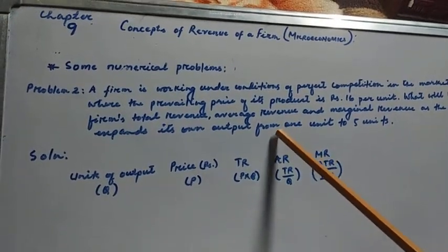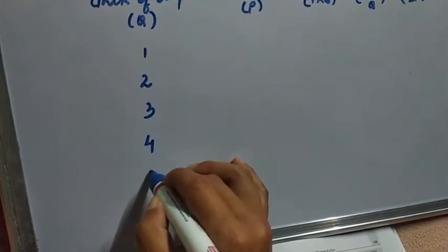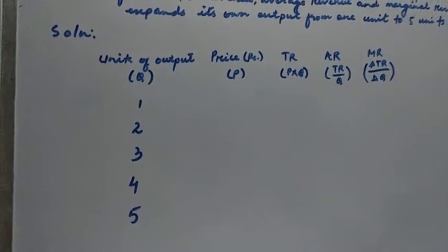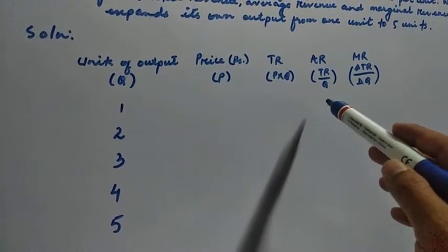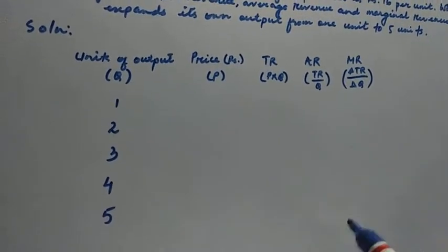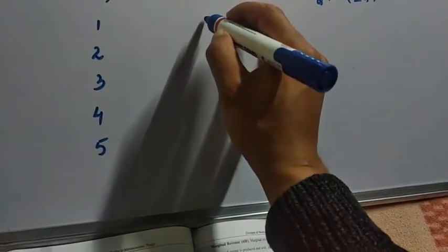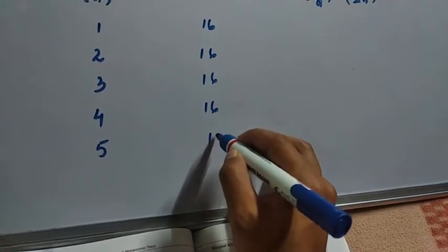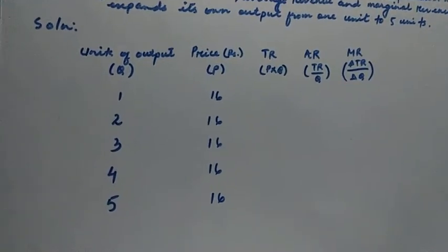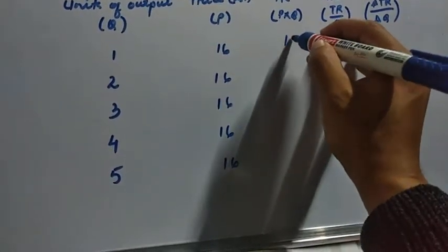Units are given from one to five. Since it is perfect competition, price remains the same at rupees 16 per unit at all levels of output. Given this information, we can find total revenue because total revenue is price into quantity. So 1 into 16 is 16.